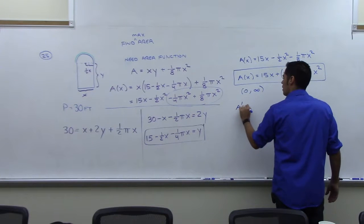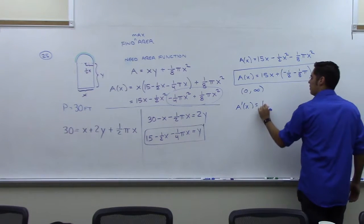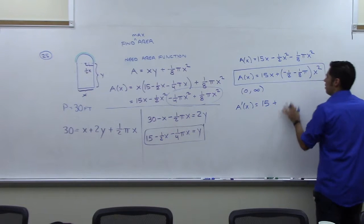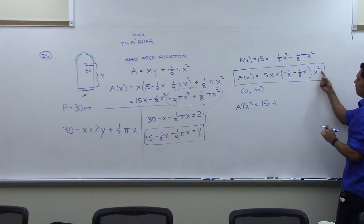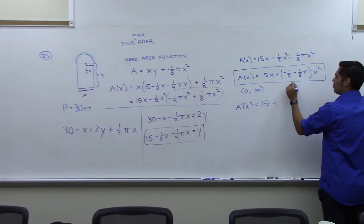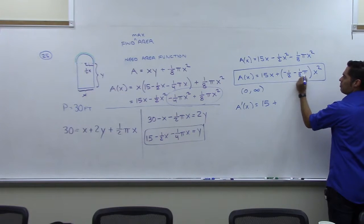So derivative of this is, let's see, derivative of 15x is 15, plus, we have a constant here. So let's just bring the constant for the ride. Derivative of x squared, the 2 comes out. So when the 2 comes out, I'm going to actually take the 2 that pops out, and I'm going to multiply it through here.